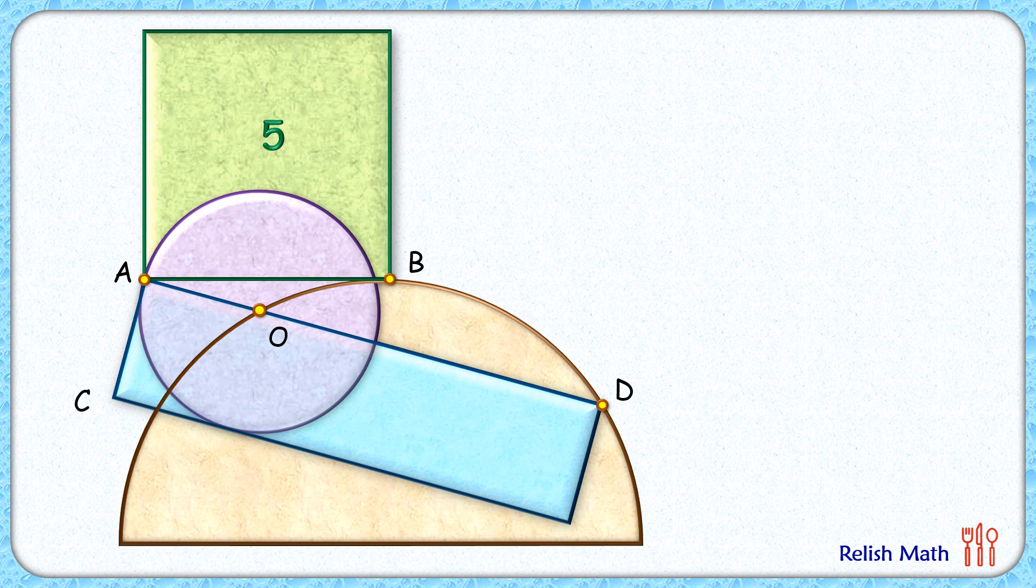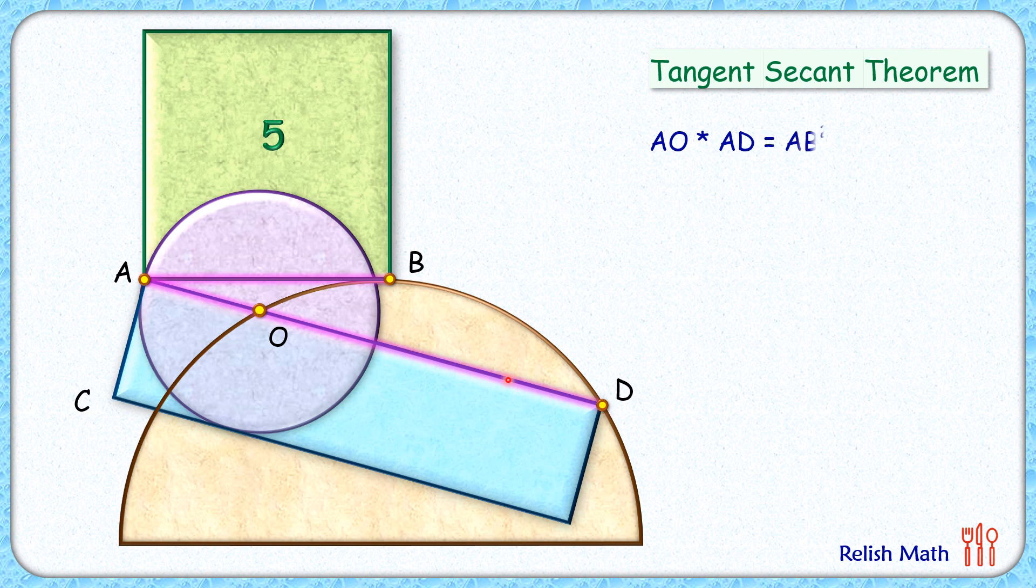Let's check this simple and elegant solution. Here with respect to this brown semicircle, from an external point A, a tangent is drawn and a secant is drawn. Now applying tangent secant theorem here, we get AO times AD is AB square.